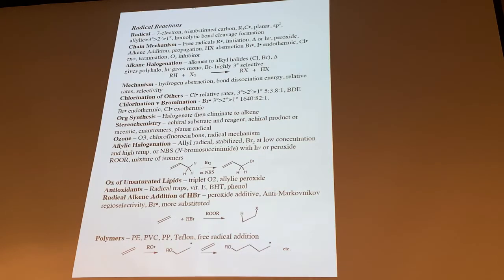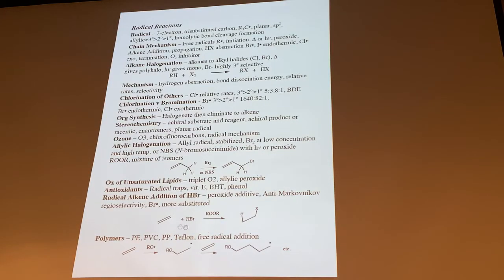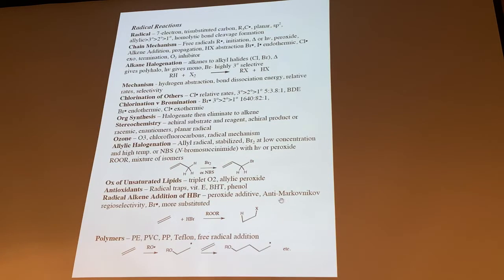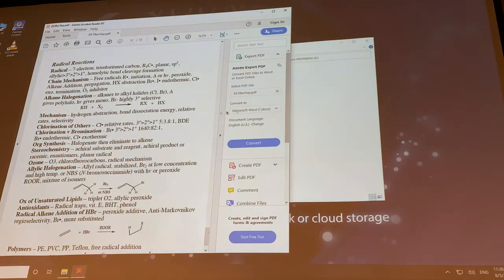Radical reactions — chapter 15. These all involve chain mechanisms where we initiate a radical. We can do alkane halogenation, allylic halogenation with NBS or bromine, and radical-based polymerization with a peroxide or light-triggered initiation. The polymers just zip together. If we have HBr and peroxide, we get the anti-Markovnikov product because we generate the more substituted radical carbon species.